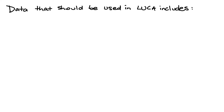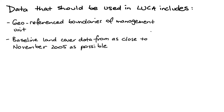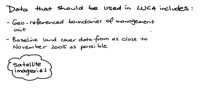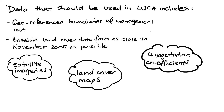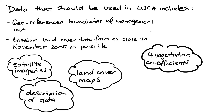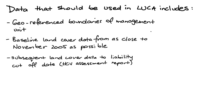Data that should be used in LUCA includes geo-referenced boundaries of the management unit, baseline land cover data from as close to November 2005 as possible using satellite imagery, land cover maps derived from these images for the entire concession area, distinguishing between the four vegetation coefficients, a description of the data and the processing methodology, and subsequent land cover data to the liability cut-off date — that is the date of an HCV assessment report.